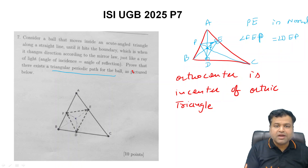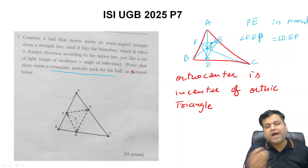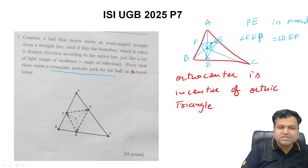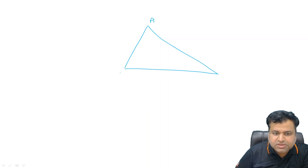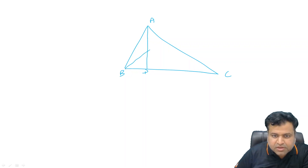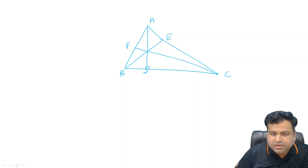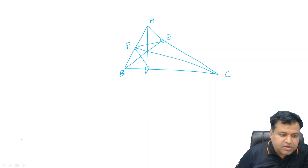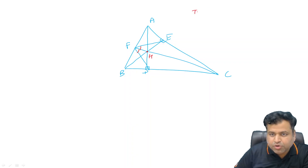What we are left to prove is: the orthocenter of any triangle is the incenter of the orthic triangle. Let's draw triangle ABC with perpendiculars BE and CF. Let's join DF and EF. If we can prove that angle HFE equals angle HFD — where H is the orthocenter — then we are done, and by the same manner HE and HD will also be angle bisectors.